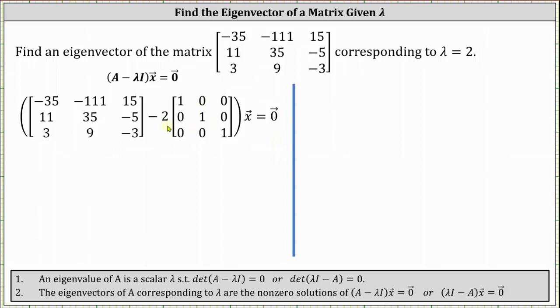Next, we multiply the identity matrix by 2, giving us the following difference. Now we subtract the two matrices. Notice we're only subtracting 2 along the main diagonal.